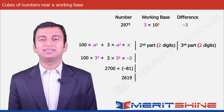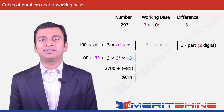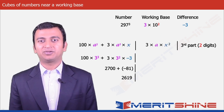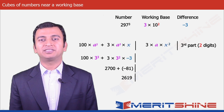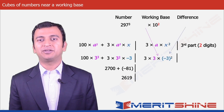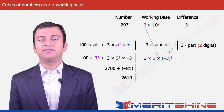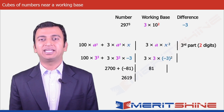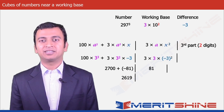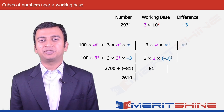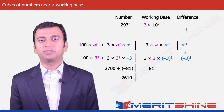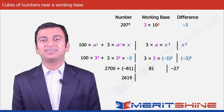The second part would be 3ax², giving us 3 × 3 × (−3)² = 81. And the third part would be x³, which is (−3)³, giving us minus 27.